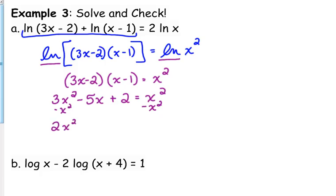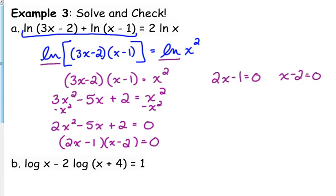We need to FOIL 3x minus 2 times x minus 1. So that's 3x squared minus 3x minus 2x, so minus 5x plus 2. Quadratics must be equal to 0. So 2x squared minus 5x plus 2. Yes, I know that 2 and 1 do not add to give me 5, but if I'm going to multiply by 2, it does. 2x minus 1 times x minus 2 will give us 2x squared minus 5x plus 2. So set both of those equal to 0. And solve. So 1/2 is potentially a solution, and 2 is potentially a solution.